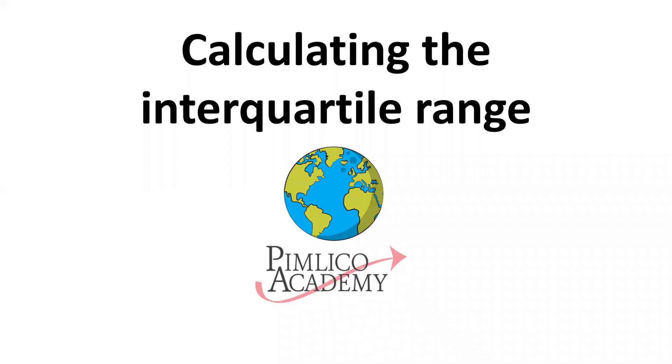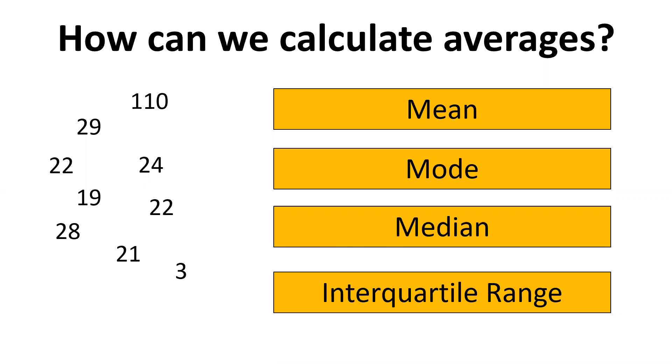This video is all about how we calculate something called the interquartile range. It sounds very tricky but actually it's not that hard. In geography very often we want to calculate the average from a set of data, the average number from a group of numbers. There are four different ways we can do that: we can use the mean, we can use the mode, we can use the median, and we can use the interquartile range.